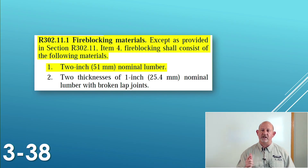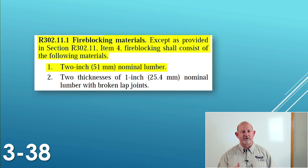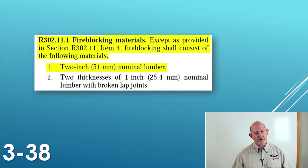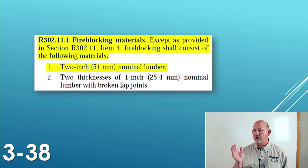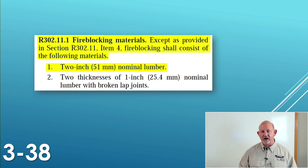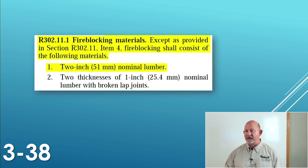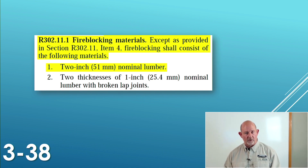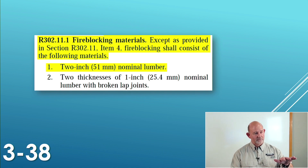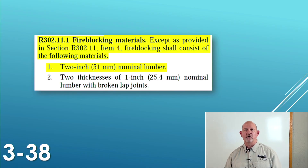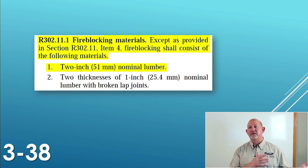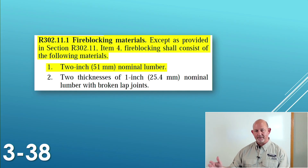What does it mean when it says 'except as provided in section R302.11, item number four'? Historically, that wouldn't have made any sense. What they're saying is: we're not talking about R302.11 item four. That's not 302.11.4 — that's 302.11, fire blocking, and then items 1, 2, 3, 4 listed below it. So except for that one thing, they've all got to be nominal two-by.